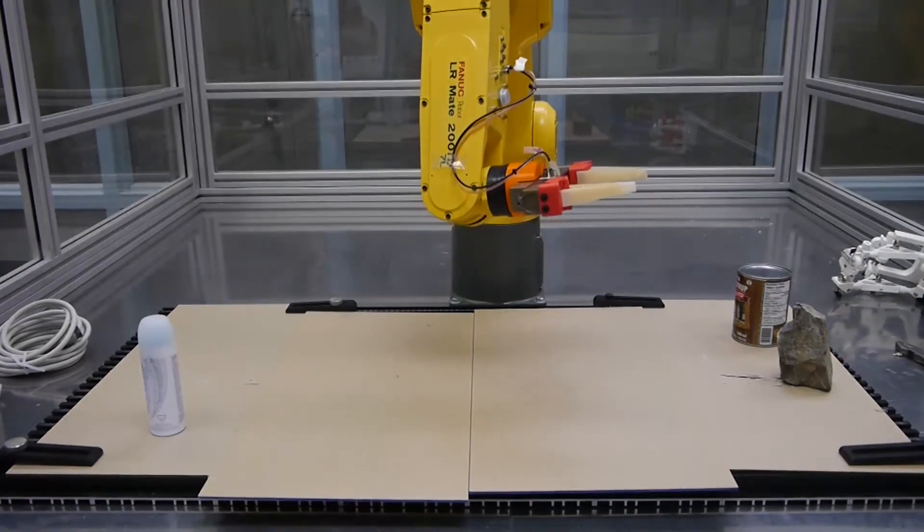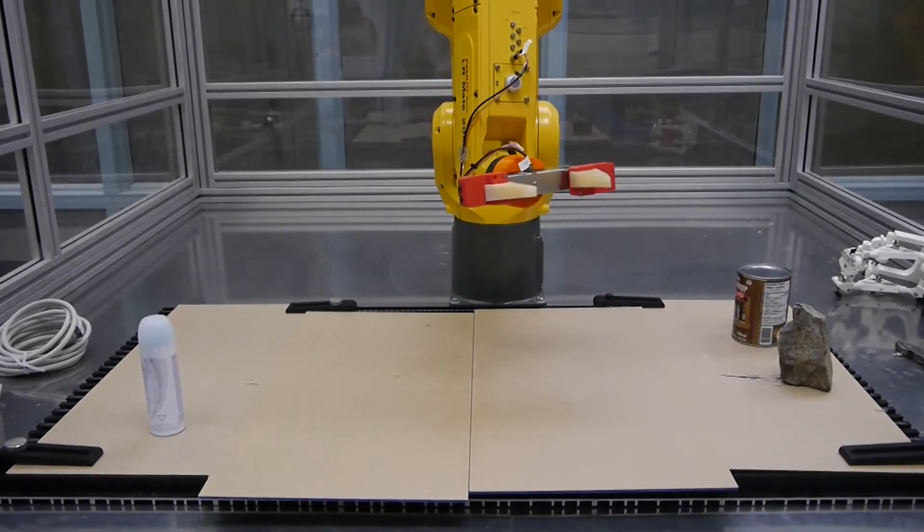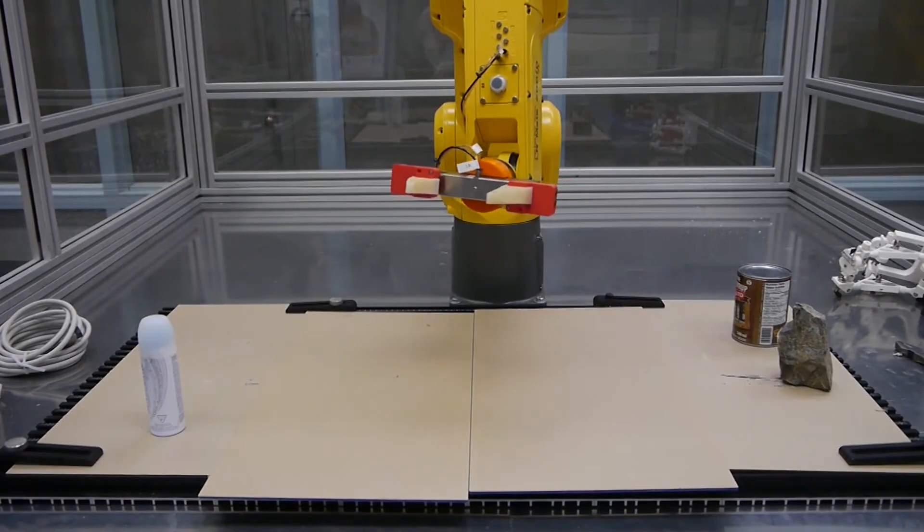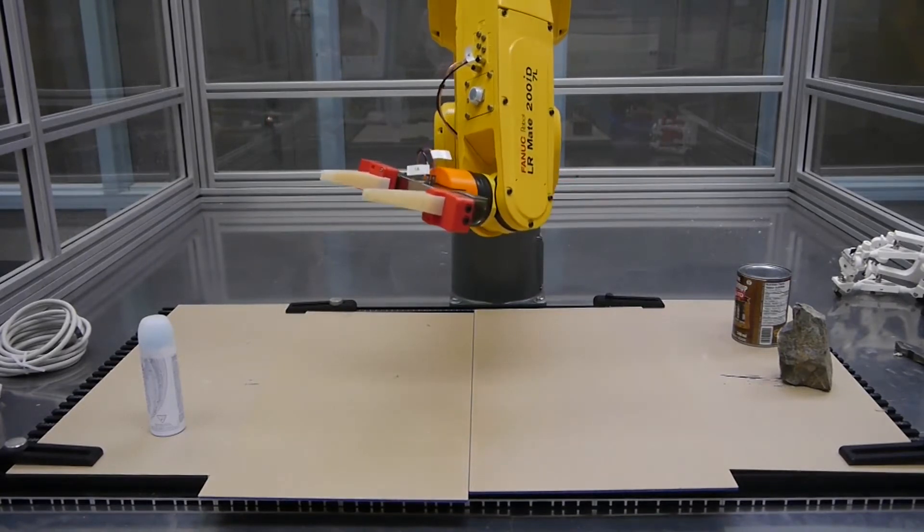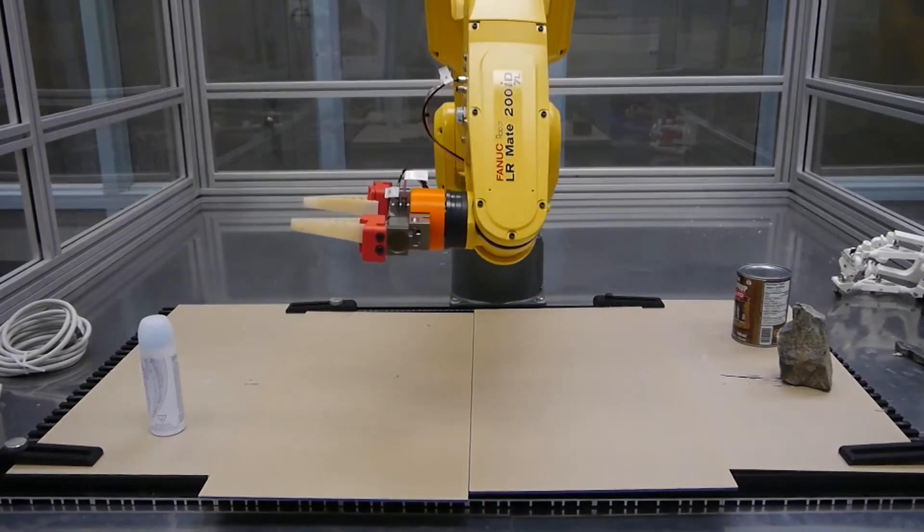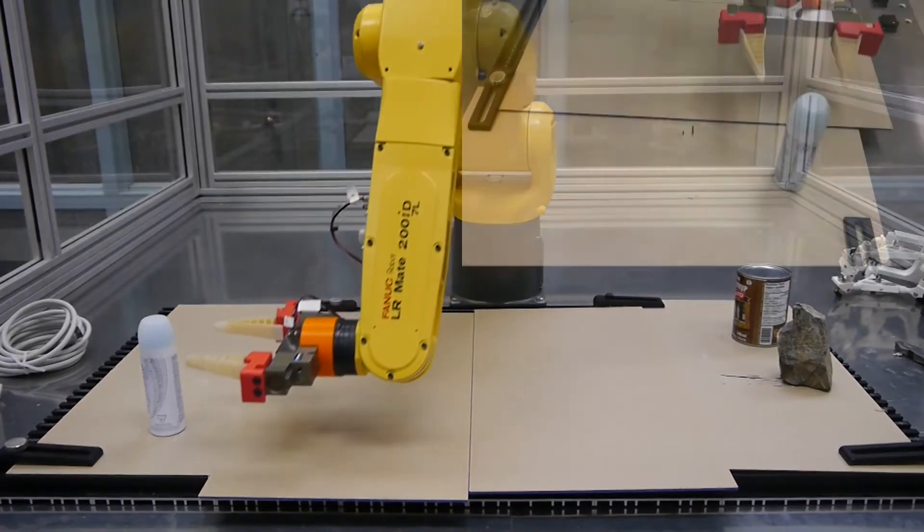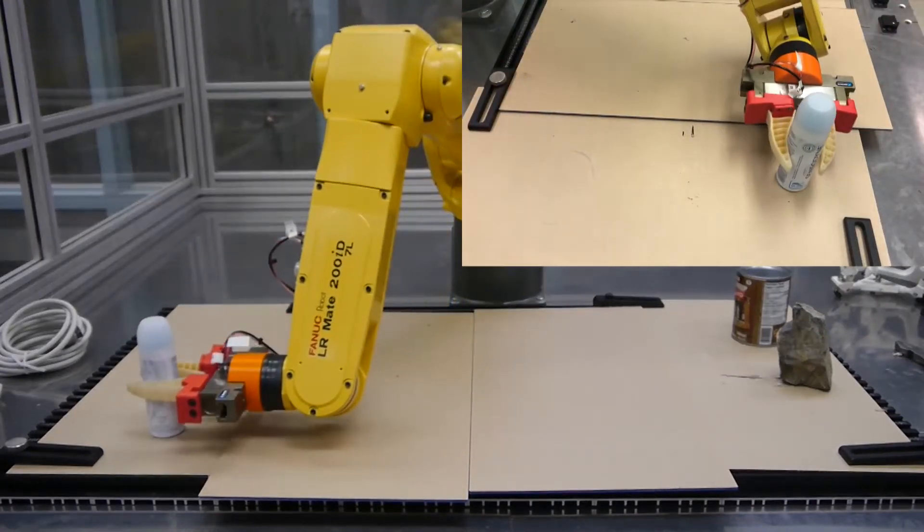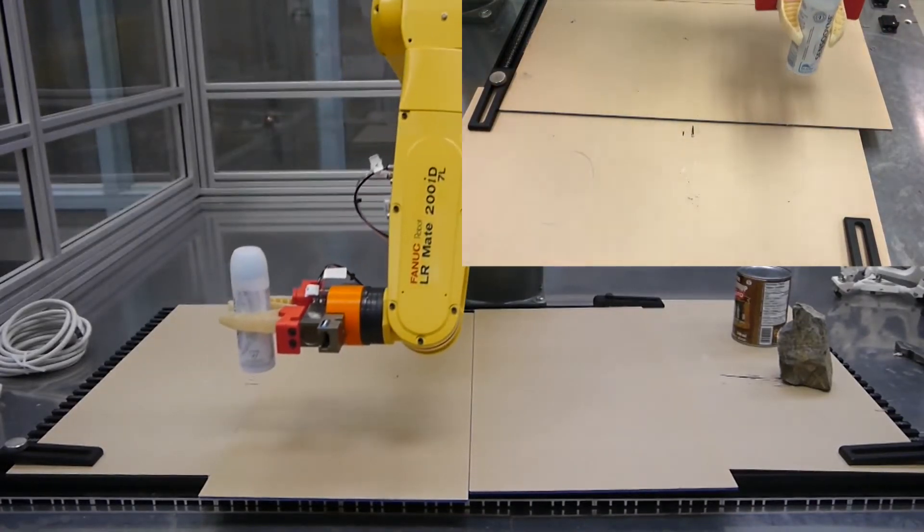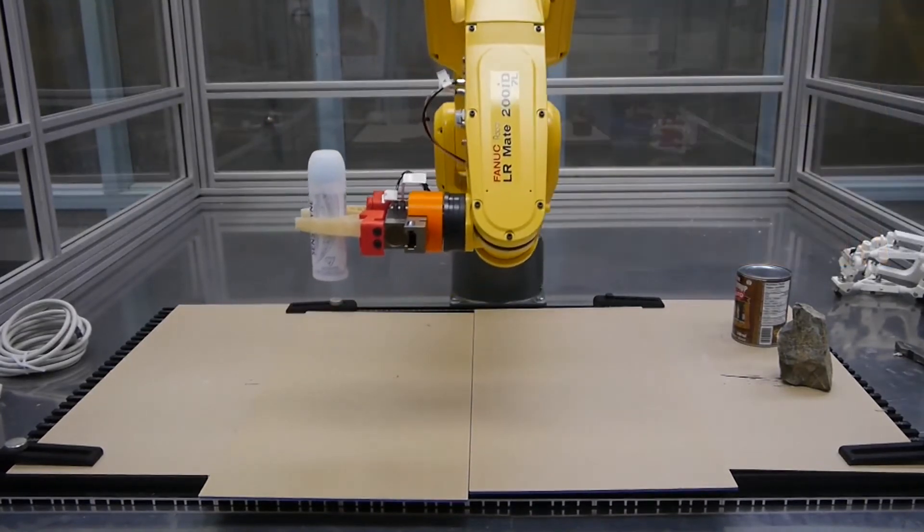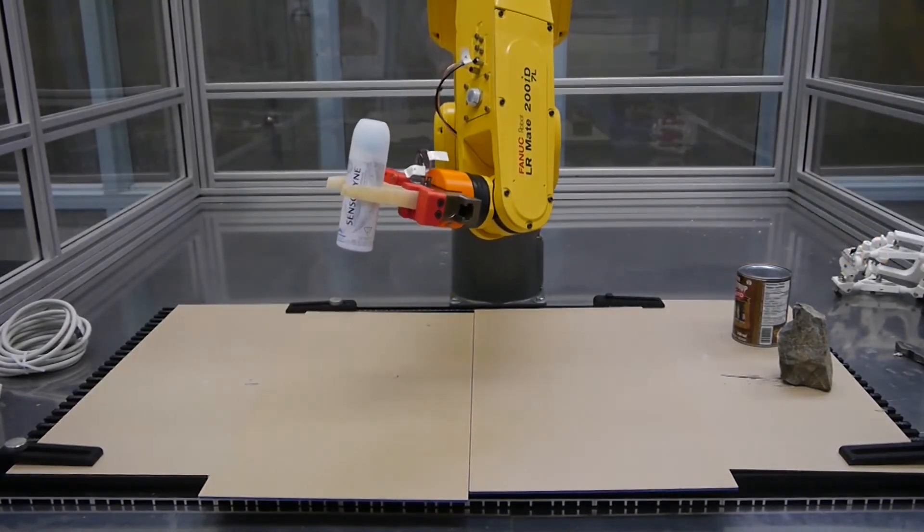Only knowing the weight of the object is not sufficient, as the forces applied by the fingers depend on their deformation, which itself depends on the shape of the object seized. Thus, it is necessary to be able to predict these forces for an arbitrary deformation of the fingers.